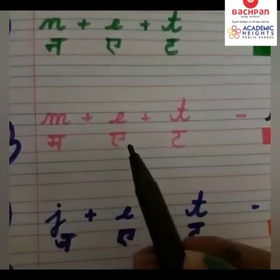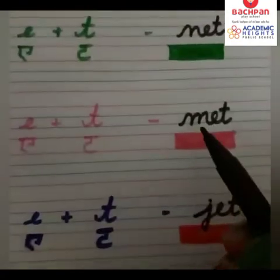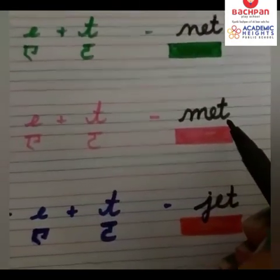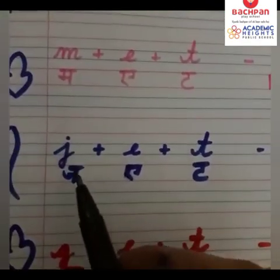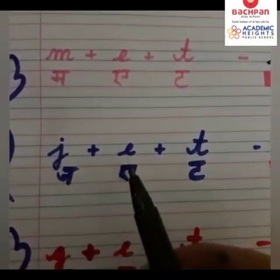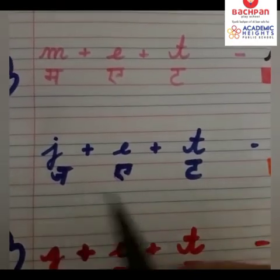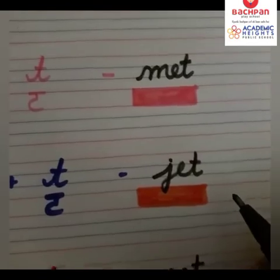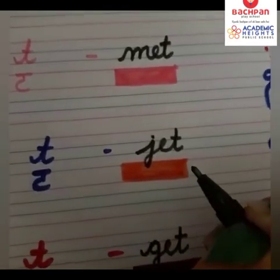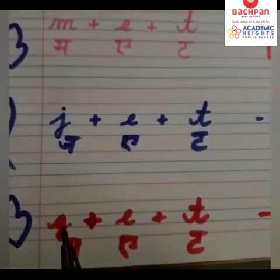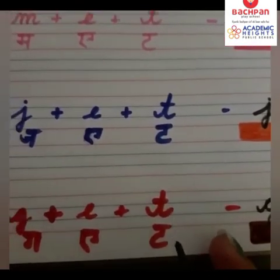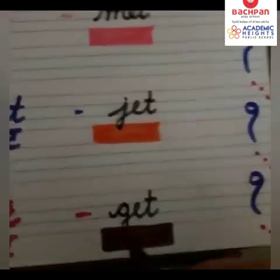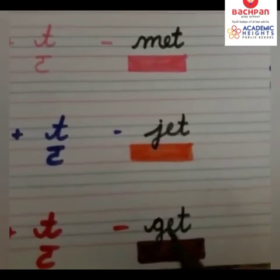M says M, E says E, T says T — M-E-T — Met. J says J, E, T — J-ET — Jet. G says G, E, T — G-ET — Get. Thank you.